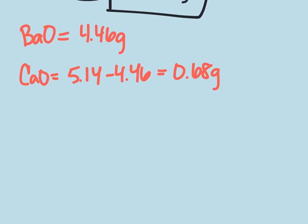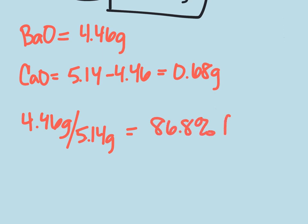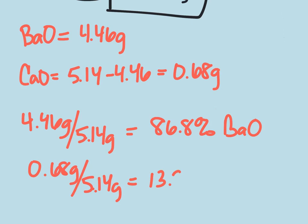Now that we know the makeup of the 5.14, we can find our percentages. So 4.46 grams divided by 5.14 grams gives us 86.8% of the mixture was barium oxide. And then 0.68 grams divided by 5.14 grams is 13.2% CaO.